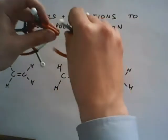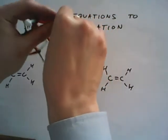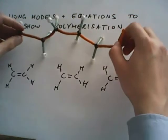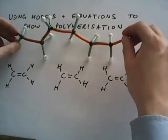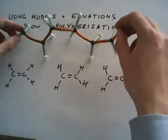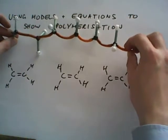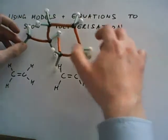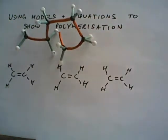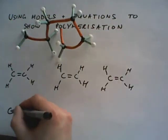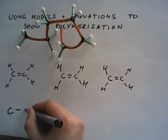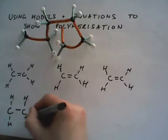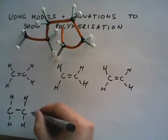I should end up with a long chain of atoms — in other words, a polymer. So I've got a long chain of atoms there. I'm going to draw what that looks like when it's not all coiled up. We've got carbon, carbon, four hydrogens, four hydrogens.